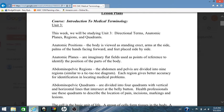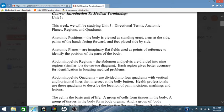Abdominal pelvic quadrants are divided into four quadrants with vertical and horizontal lines that intersect at the belly button. Health professionals use these quadrants to describe the location of pain, incisions, markings, and lesions.